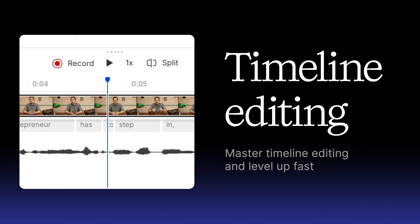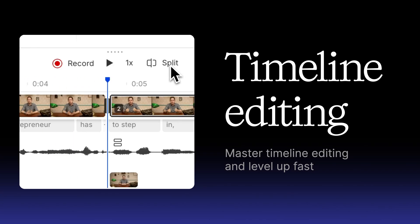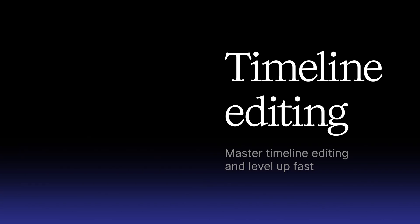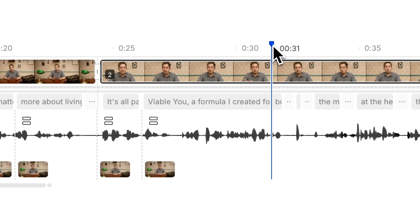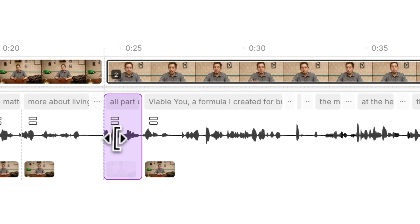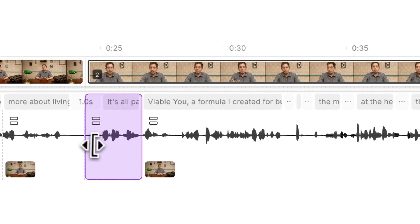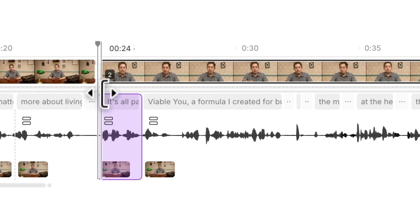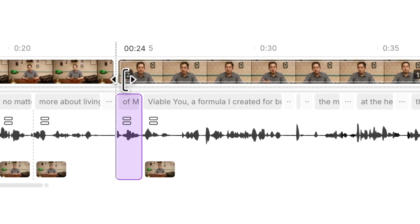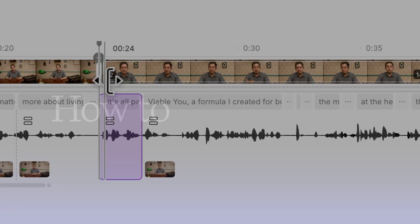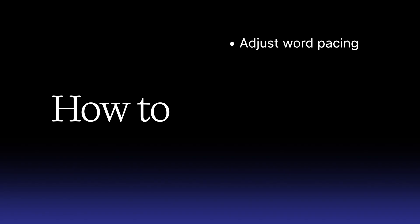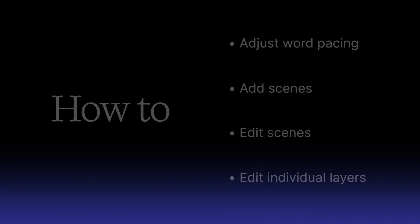Editing video doesn't have to be complicated. Descript's timeline makes it simple to edit with precision, like adjusting pacing and fine-tuning timing of visuals and audio, without clutter or complex tools. We'll show you how to use the timeline to adjust word pacing, add scenes, make edits to scenes, and edit individual layers.